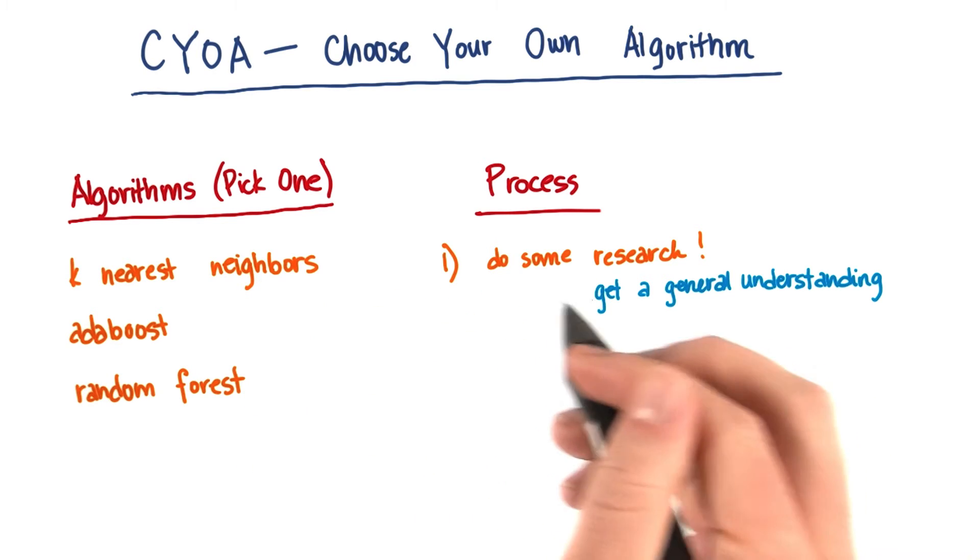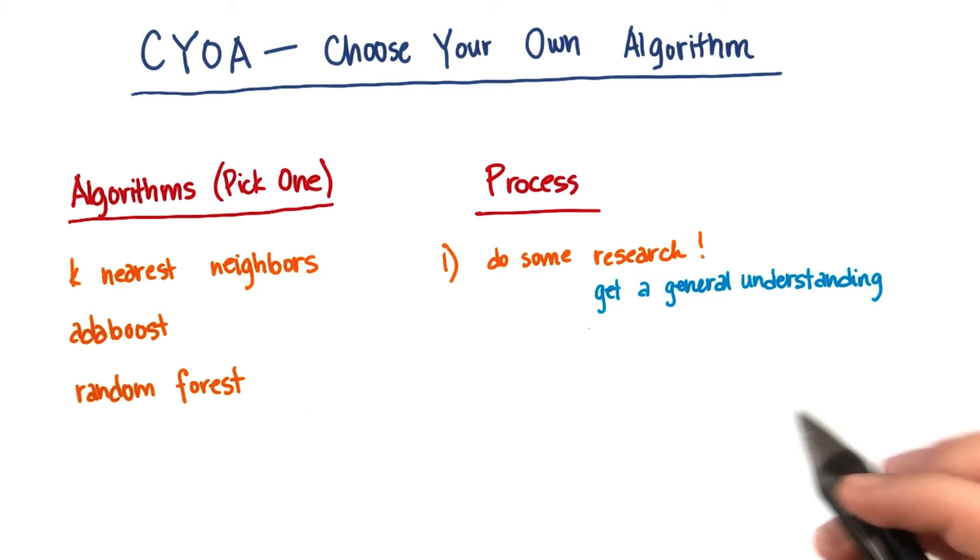The first is to take the name of your algorithm and head on to Google to do some research. Get a general understanding of what the algorithm does. If you can explain the algorithm to a friend, for example, then you probably understand it well enough that you're ready to move on to the next step.